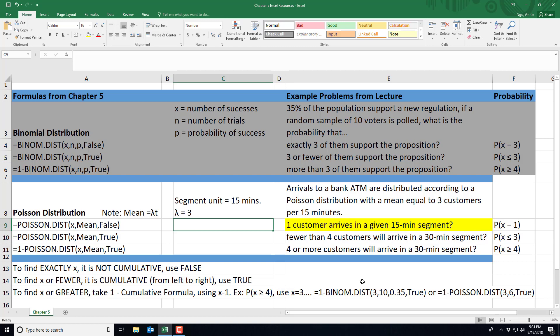I'll go ahead and use this formula for an exact value of equals POISSON. Excel pre-populates it so you can just double click on that or continue to type it out. We'll type in our x of 1. Our mean was our lambda of 3 times our 1 segment, so 3 times 1 is 3.